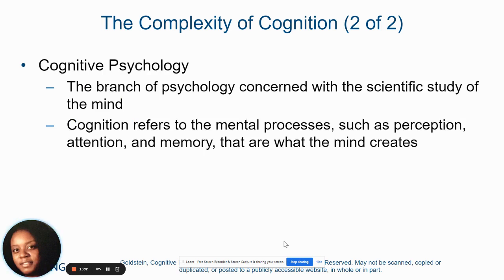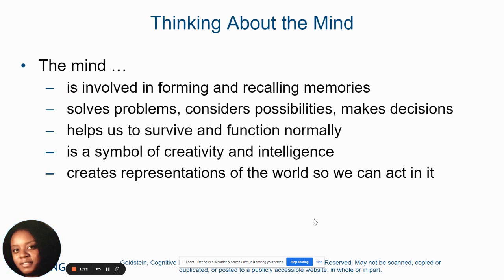In the field of psychology, cognitive psychology is the branch that specifically studies the mind and how the mind processes information. This can refer to mental processes such as your perception, your attention, and your memory. Anything the mind creates could fall into the field of cognitive psychology — memories we can recall and form, how we problem solve, the ways we make decisions, creativity, and intelligences. All of this relates to the mind and how we see the world.